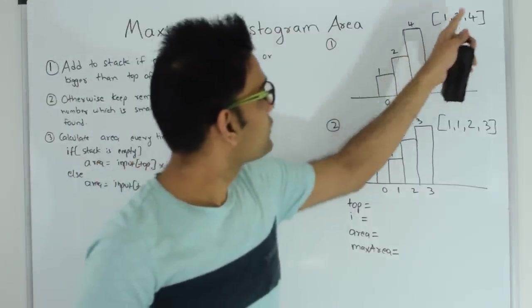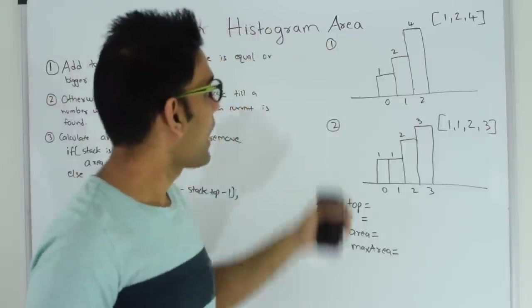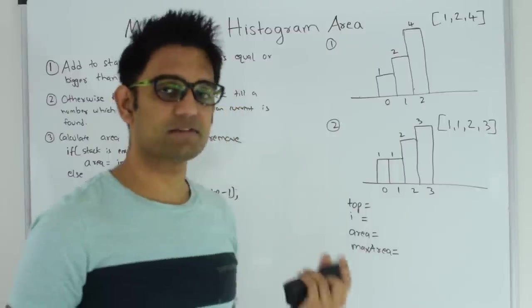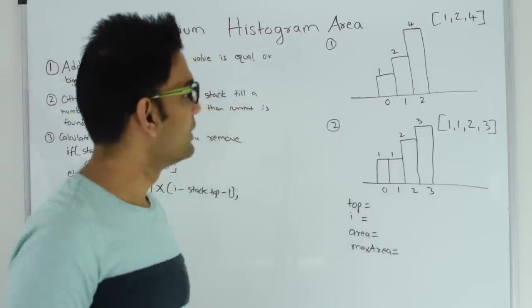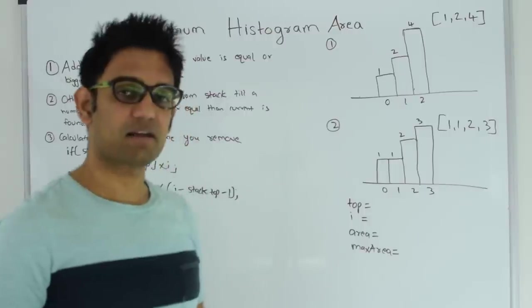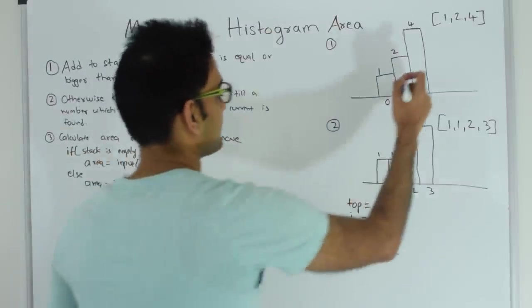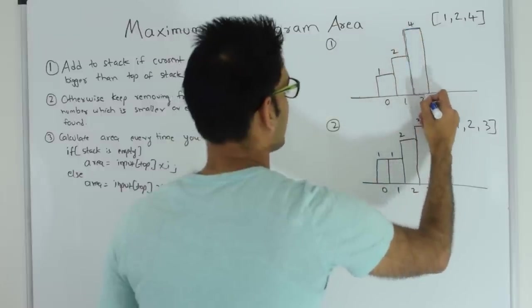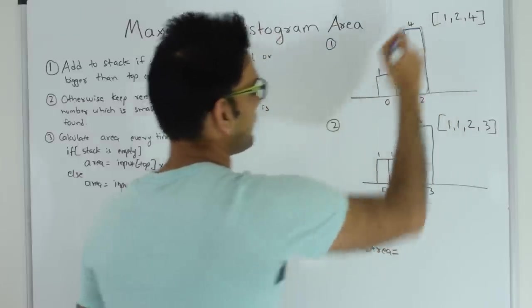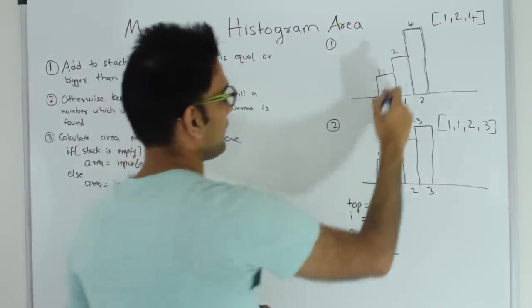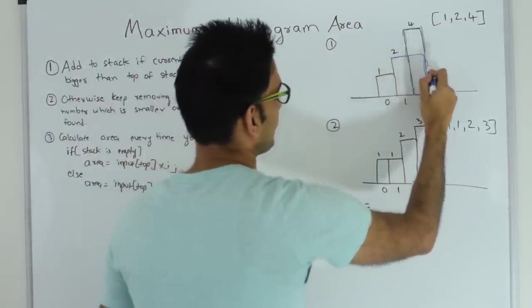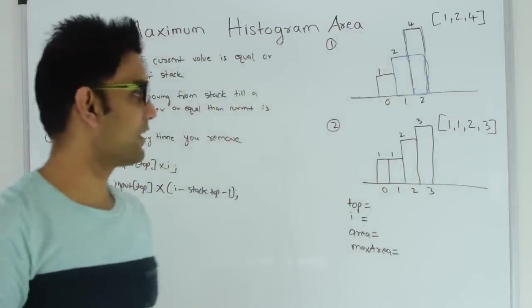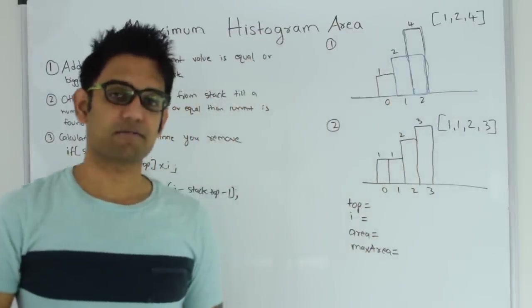For example, given an array [1, 2, 4], the height of the bars in this graph is 1, 2, and 4. The width is a constant of unit 1. So you have to find the rectangle with the maximum area. For this graph, the rectangle with the maximum area has area 4, and there is another rectangle with area 4 as well. So in either case, the max area for this bar graph is 4.